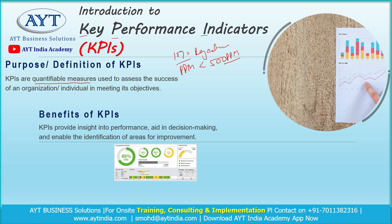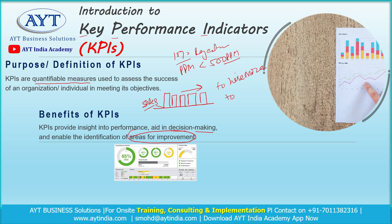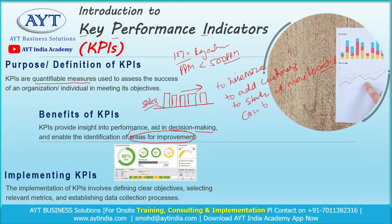KPIs provide us insight into performance and help us in decision making. We can identify areas for improvement — for example, if our sales are continuously going downwards or have been stable for the last six months, we can take decisions to hire more people, add more customers, or start business at more locations. All these decisions can only be taken if we have the right data set, and that data set is called KPI.